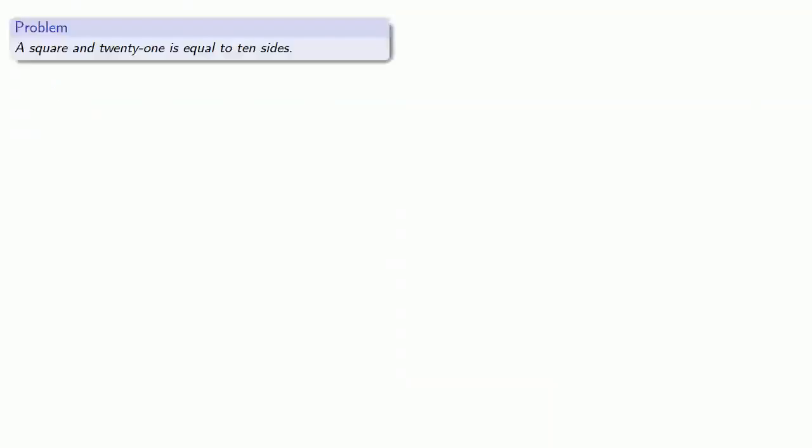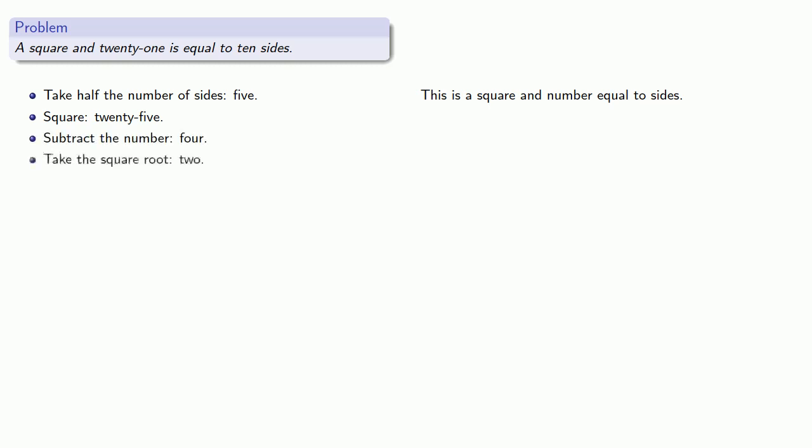So Al-Khwarizmi also looked at the problem: a square and 21 is equal to 10 sides. This is square and number equal to sides. Again, Al-Khwarizmi gave a procedure: take half the number of sides (5), square this (25), subtract the number (4), take the square root (2), then subtract from half the number of sides (3), which is the solution.